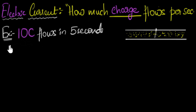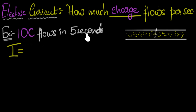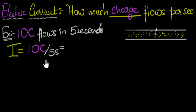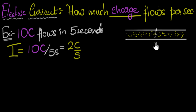So what's going to be the current at that point? The current, which we usually represent as I, is calculated as how much charge flows per second — how many coulombs are flowing per second. We have 10 coulombs per five seconds, which amounts to two coulombs per second. And we can say that is the current at that point: two coulombs per second, meaning every second two coulombs are passing by.